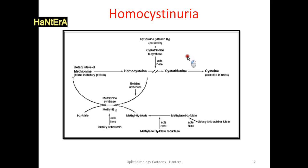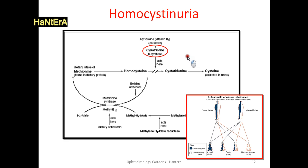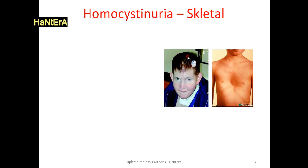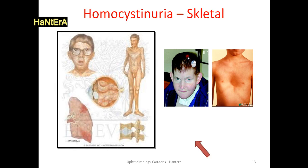Homocystinuria is an inherited disorder of the metabolism of the amino acid methionine, often involving cystathionine beta-synthase. It is an inherited autosomal recessive trait. Homocystinuria represents a group of hereditary metabolic disorders characterized by an accumulation of homocystine in the serum and increased excretion of homocystine in the urine. It is characterized by a Marfanoid habitus — tall and thin, with a flush across the cheeks. The life expectancy is reduced if untreated; before the age of 30, almost one-fourth of patients die as a result of thrombotic complications.